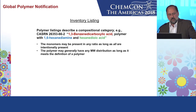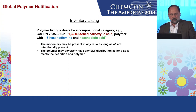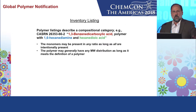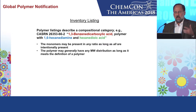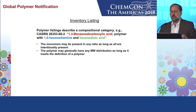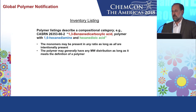Polymers are actually listed as a compositional category. Here's an example listing: 1,3-benzene dicarboxylic acid polymer with 1,6-hexane diamine and hexane dioic acid. The red, blue, and green monomers can be present in any ratio as long as all are intentionally present — it could be 99% red, 0.5% blue, 0.5% green, or 50/25/25 — it doesn't matter as long as all three are present. Also, the molecular weight distribution generally doesn't matter as long as you meet the definition of a polymer.